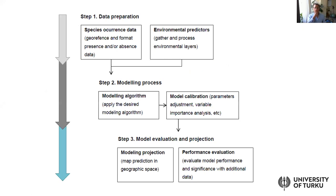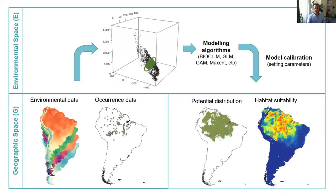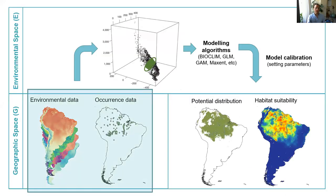So that you remember where we are in the modeling process — we're in the data preparation stage, focusing on downloading both environmental predictors and species data, and then visualizing this in QGIS. This is the part of the modeling procedure where we visualize species data and environmental data in QGIS software.